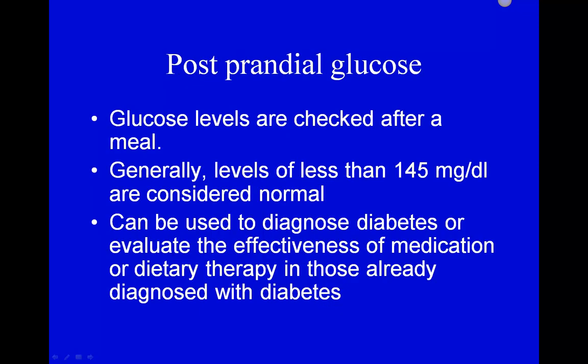Postprandial glucose means taking a blood sugar level after a meal. The normal range shifts upward from 60 to 100 or 60 to 110 milligrams per deciliter because eating causes a temporary rise before insulin normalizes it. This test can be used to diagnose diabetes, or most commonly to evaluate the effectiveness of medication. In hospitals, postprandial blood glucose checks ensure patients are on the right dosage to keep blood sugar levels appropriate after eating.